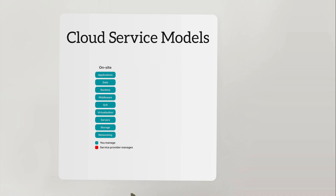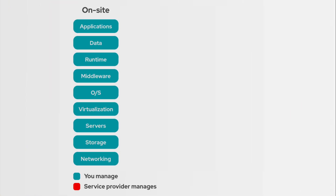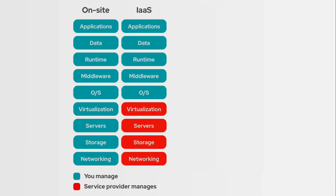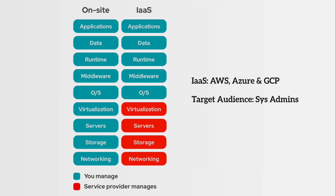There are two things you need to understand to understand the cloud. First, cloud service models. We start off at on-site, where we manage everything — the server, networking, storage, everything. The next level up is IaaS, or Infrastructure as a Service, where everything from the operating system down is managed by a third-party service provider, and everything above the OS we manage. Some of the big providers in the IaaS space are Amazon Web Services, Microsoft Azure, and Google Cloud Platform. The target audience for this type of cloud is system administrators.